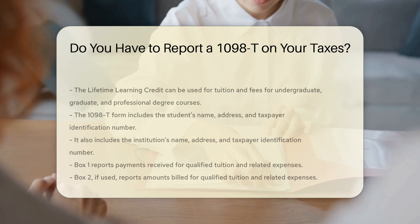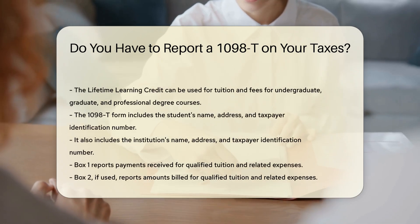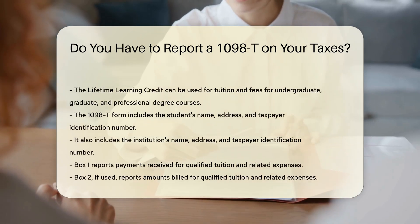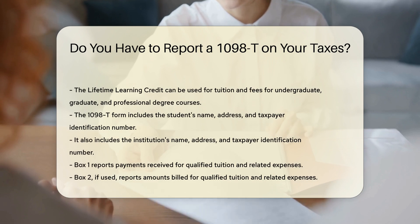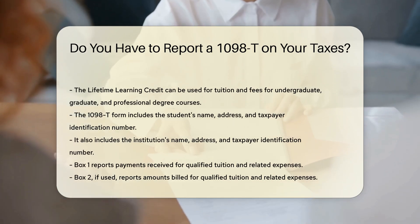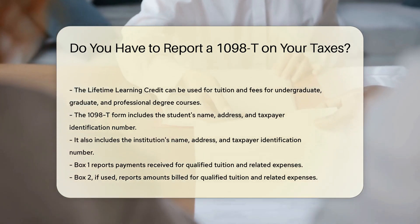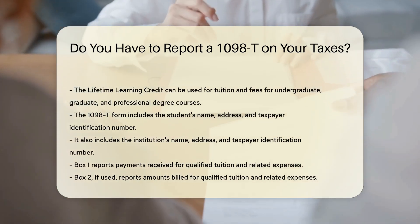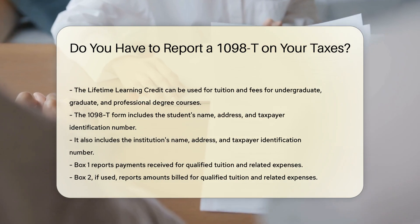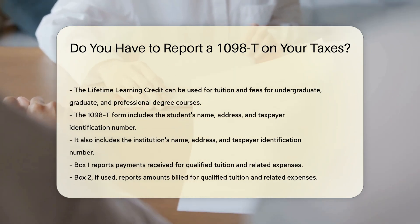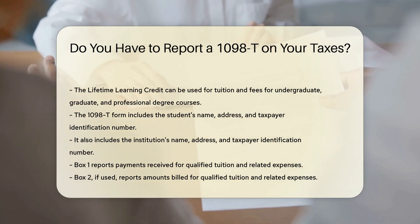The 1098-T form includes information such as the student's name, address, and taxpayer identification number. It also includes the institution's name, address, and taxpayer identification number.